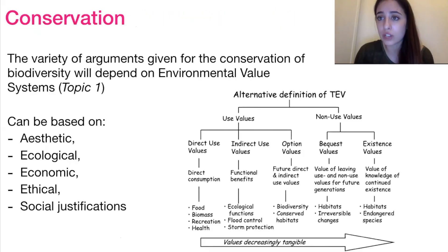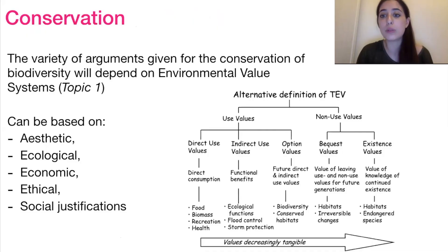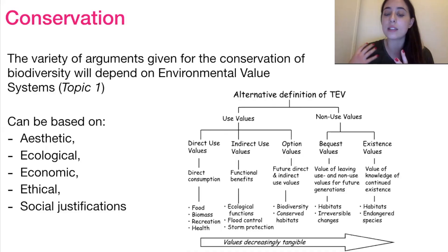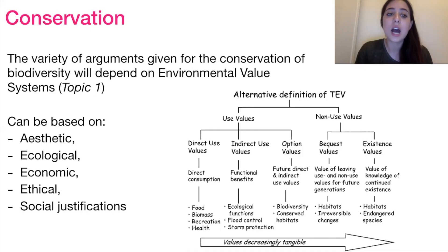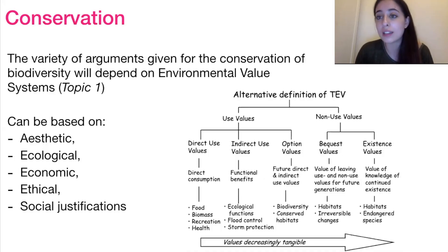When talking about conservation efforts in terms of biodiversity, this ties into environmental value systems from topic one — the way that you apply value to a resource. As you move from direct use values, something tangible like food or biomass you can directly retrieve, it's much easier to quantify and assign an economic value than something like existence value — the right of a species to exist in and of itself — or bequest values, the value for future generations. Arguments for conserving biodiversity can be based on aesthetic, ecological, economic, ethical, and social justifications.